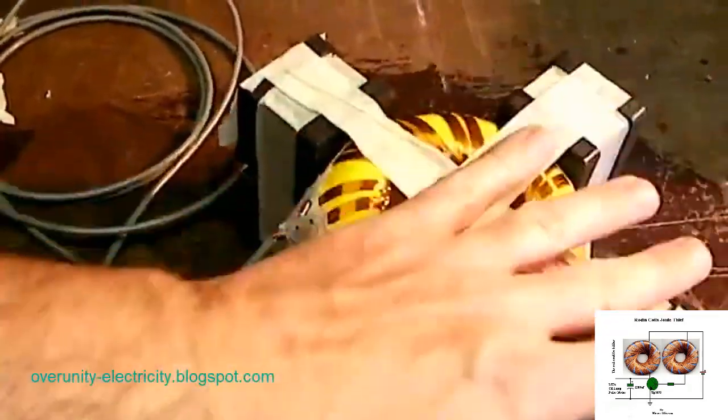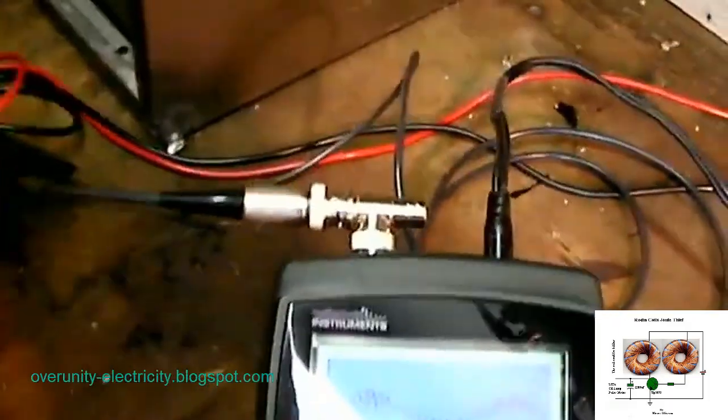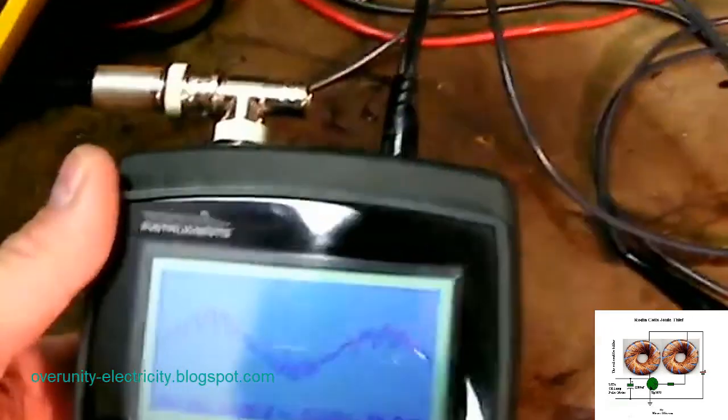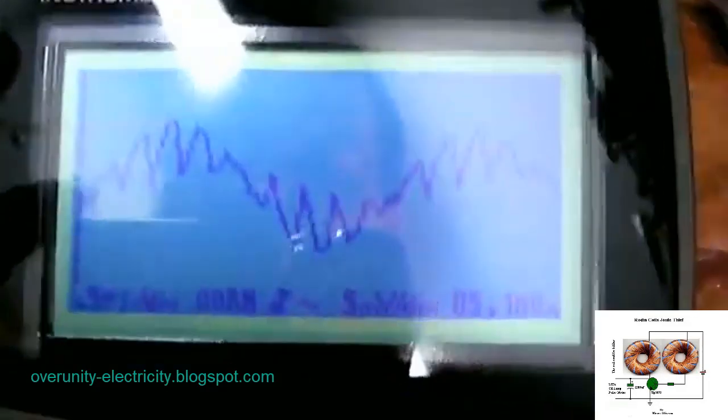Rodin coils have found their place in various electronic circuits, including joule thief circuits, where they contribute to the generation of free energy. This remarkable technology has not only captivated the imagination of enthusiasts but has also attracted the attention of experts in the field of ether physics.